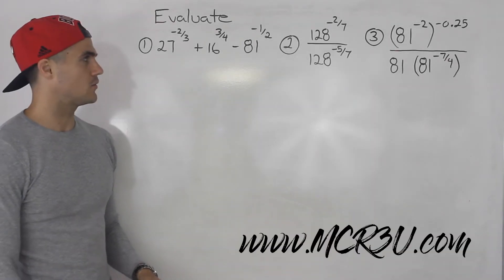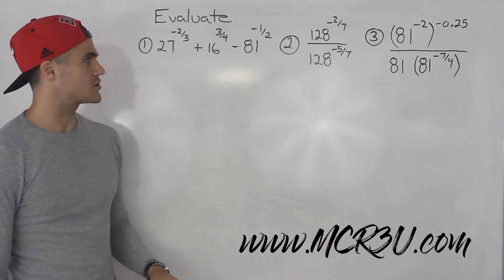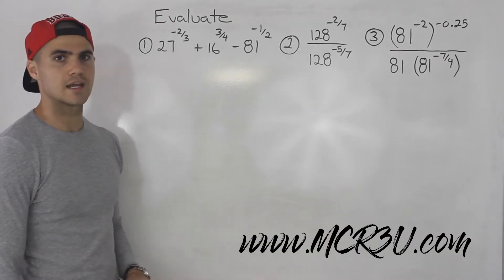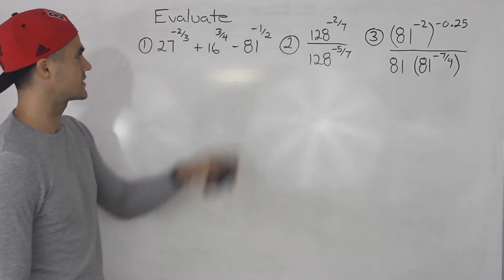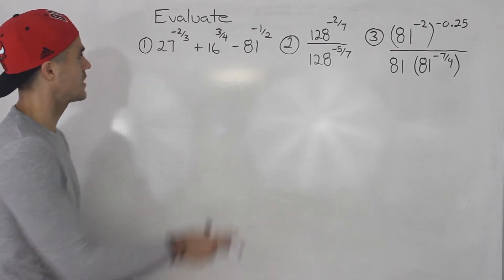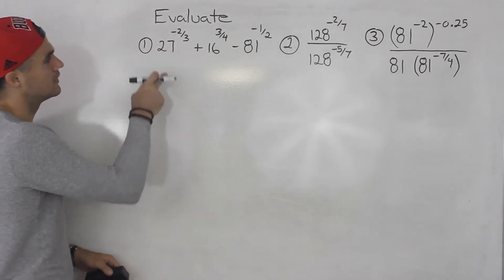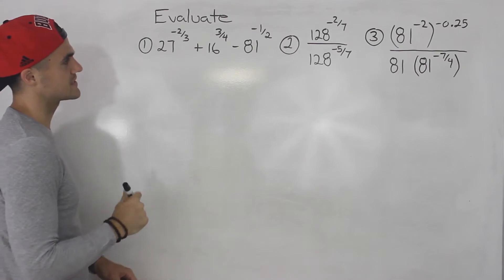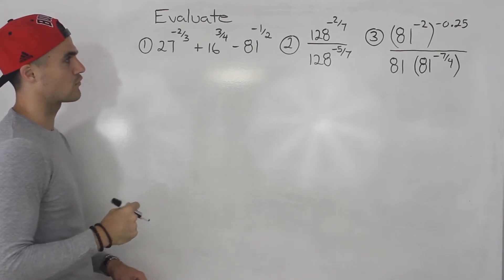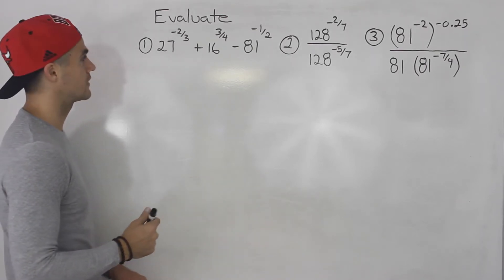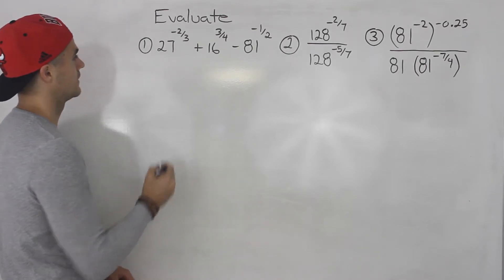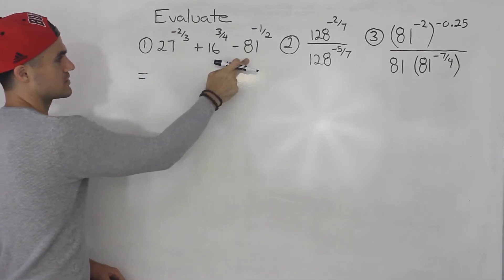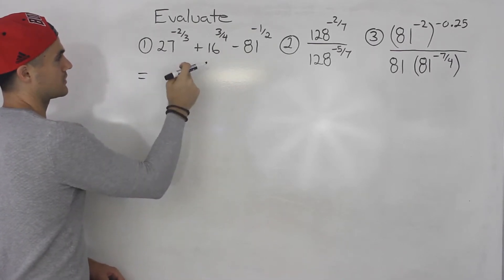What's up everyone? In this video we have more expressions to evaluate containing rational exponents. We have three expressions. Starting with number one, we have 27 to the power of negative 2 over 3, plus 16 to the power of 3 over 4, minus 81 to the power of negative 1 half. Let's evaluate each of these separately.